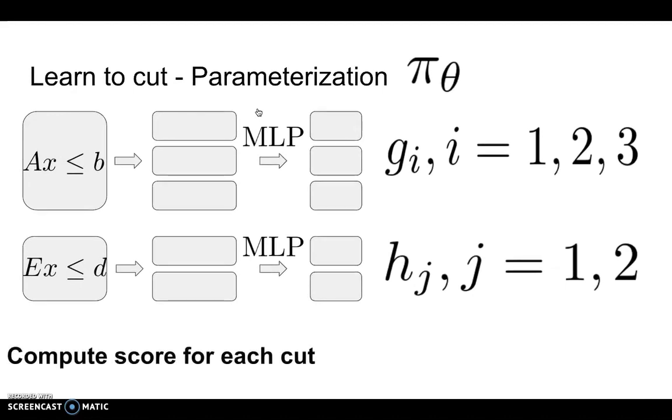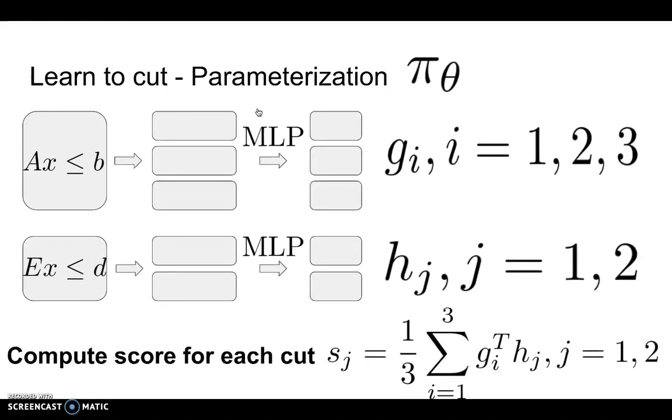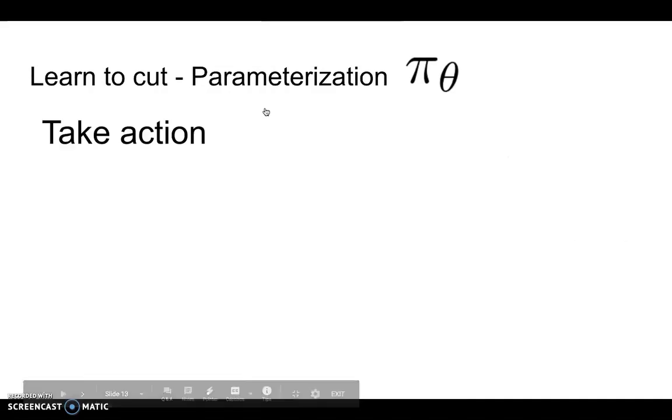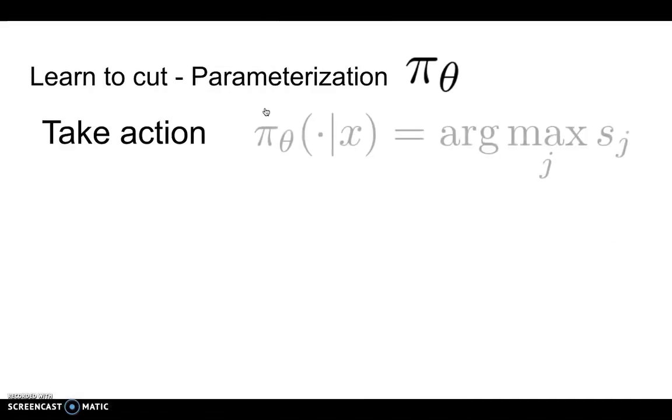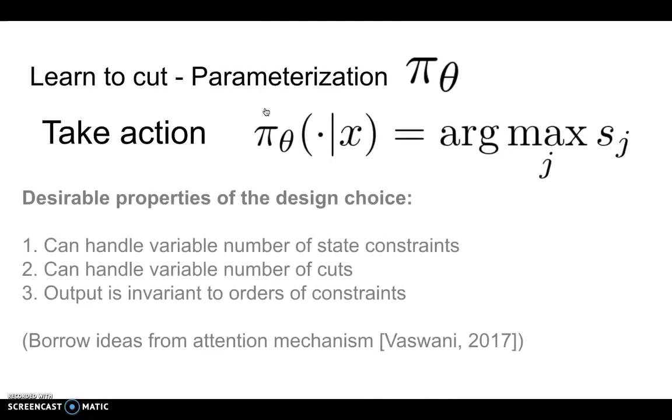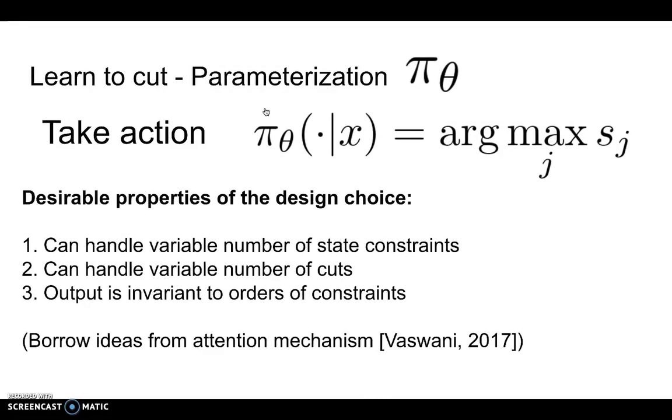Now we try to compute a score for each of the newly added constraints, using the formula shown at the bottom right of the slide. To define the policy, we take the cutting plane with the maximizing score.